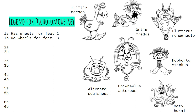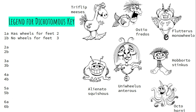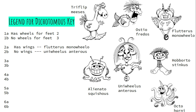Now I'm going to make my question for the two organisms that have wheels. I need to come up with a distinguishing feature that one has and the other doesn't. Be careful not to use something too broad that other animals would also have. I'm going to look for something specific — wings. In question two, does my organism have wings? If yes, it is Flutteris Monoheelo. If it does not have wings, it's Unowheelis Antorus. None of my other organisms really have wings, so it's a safe choice, and I've now named two of my species.